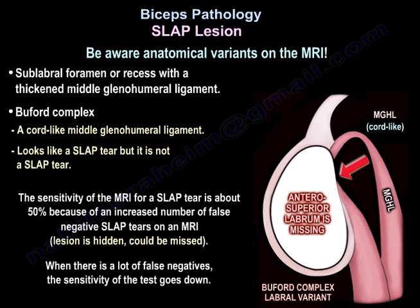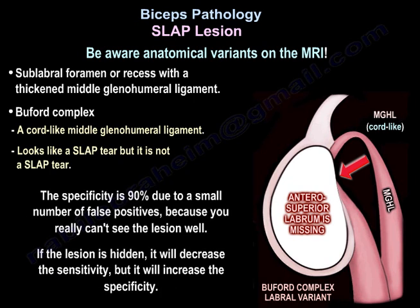Be aware of anatomy variants on the MRI such as a sublabral foramen or recess with a thickened middle glenohumeral ligament, or the Buford complex — a cord-like middle glenohumeral ligament. If you repair that complex thinking it is a tear, there will be severe loss of external rotation of the shoulder. The sensitivity of the MRI for a SLAP tear is about 50% because of an increased number of false negatives, as the lesion can be hidden. The specificity is 90% due to a small number of false positives.